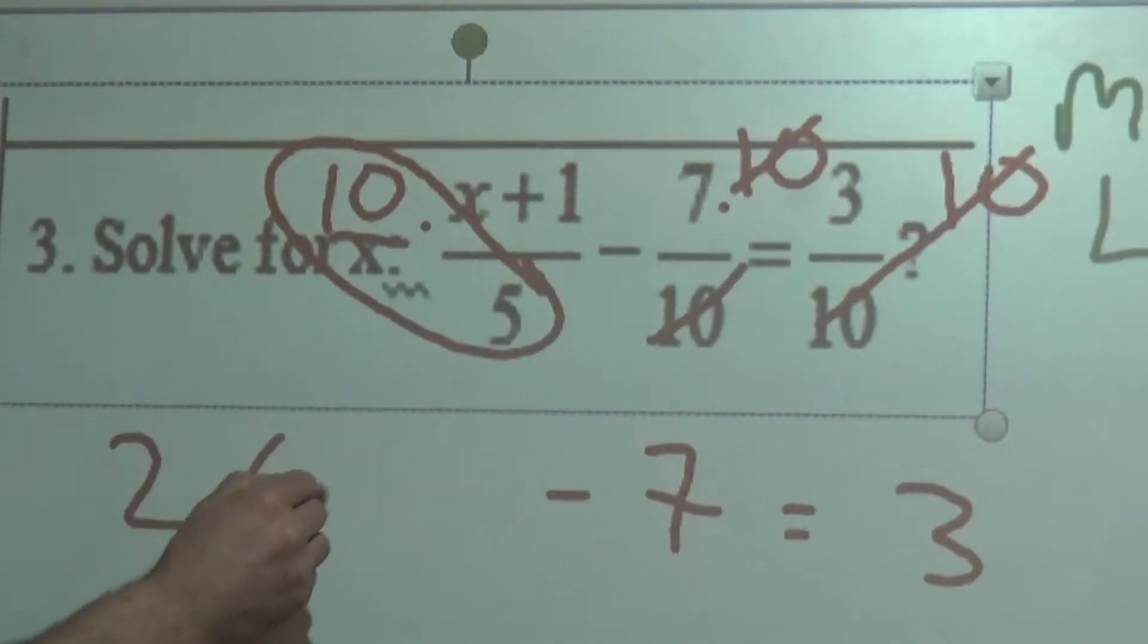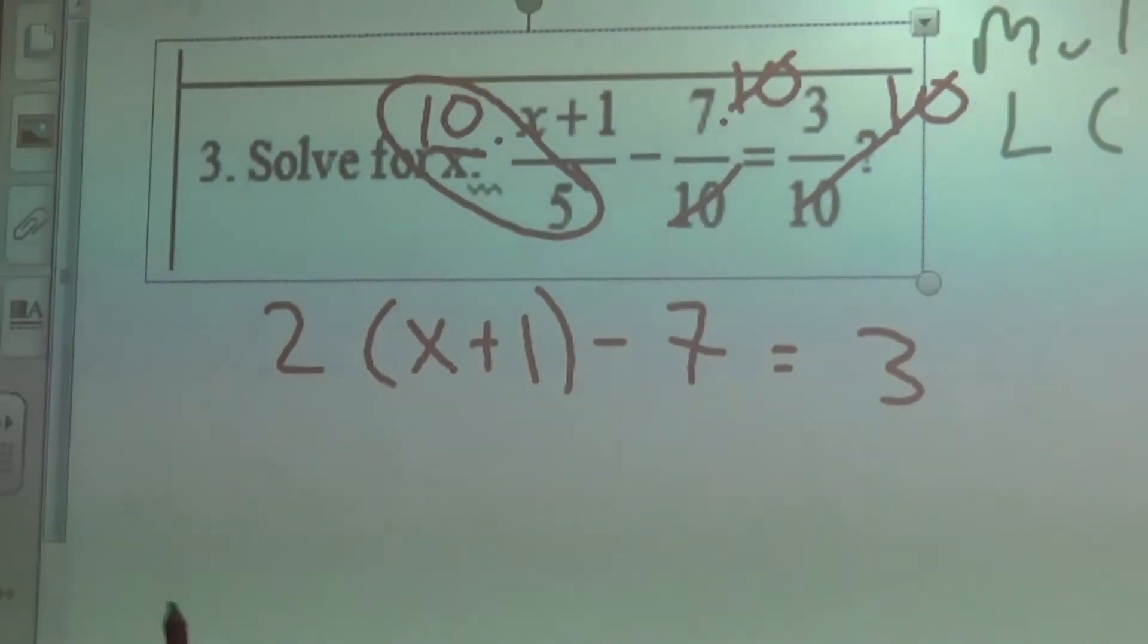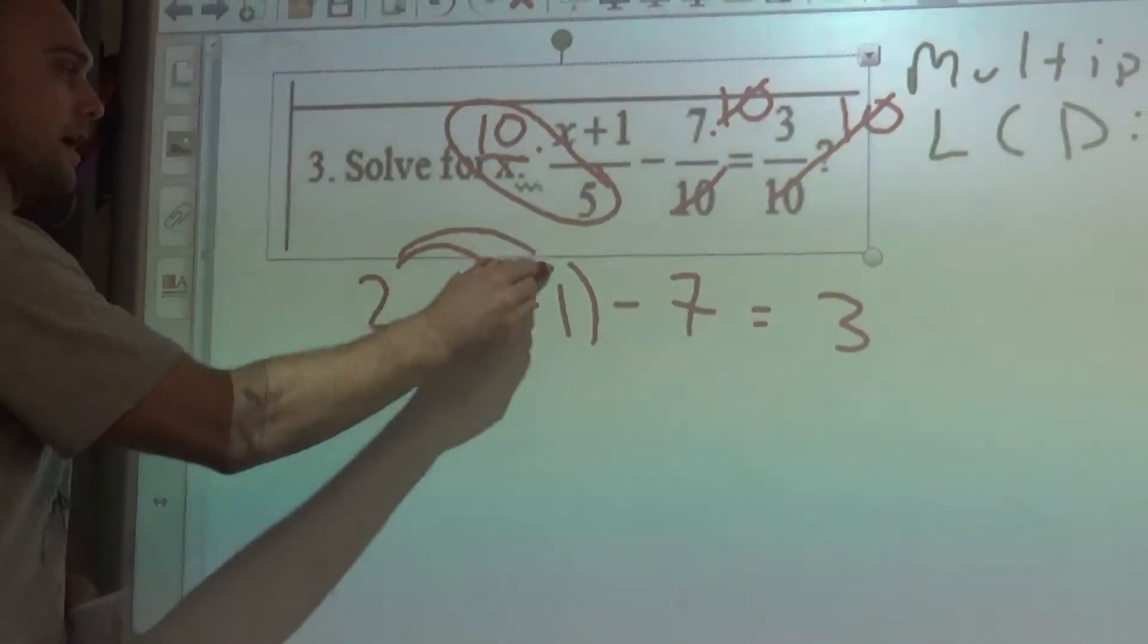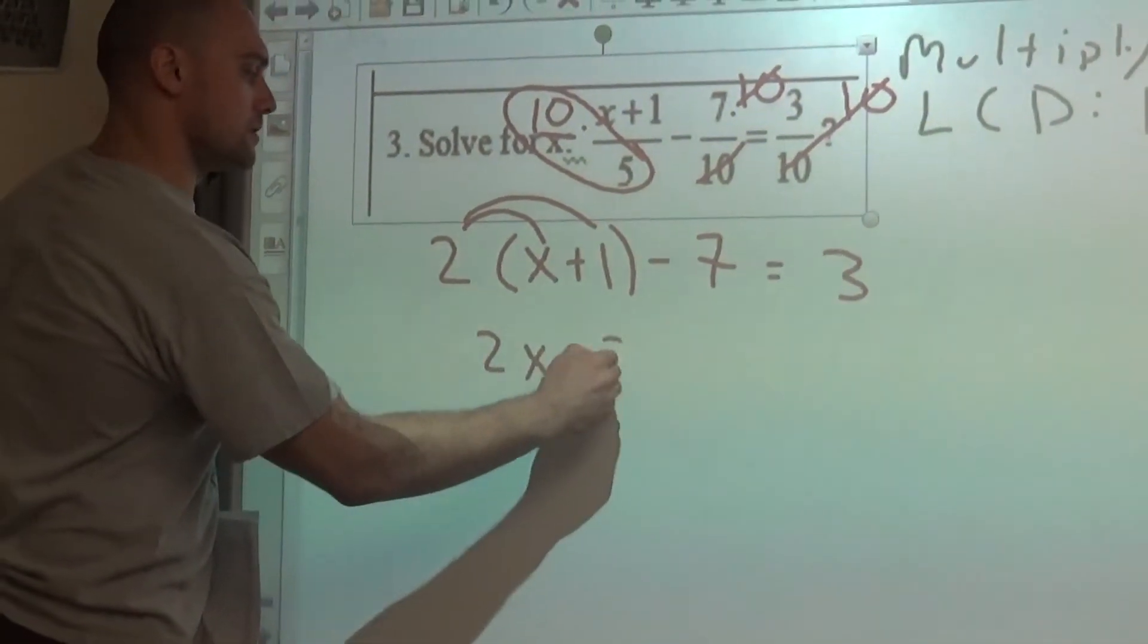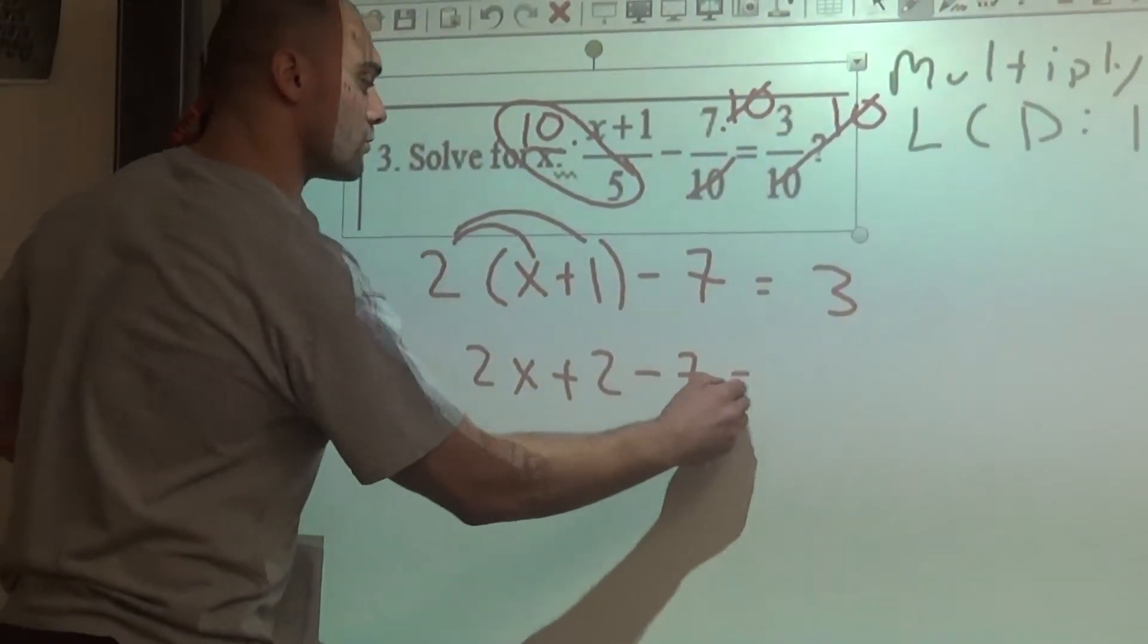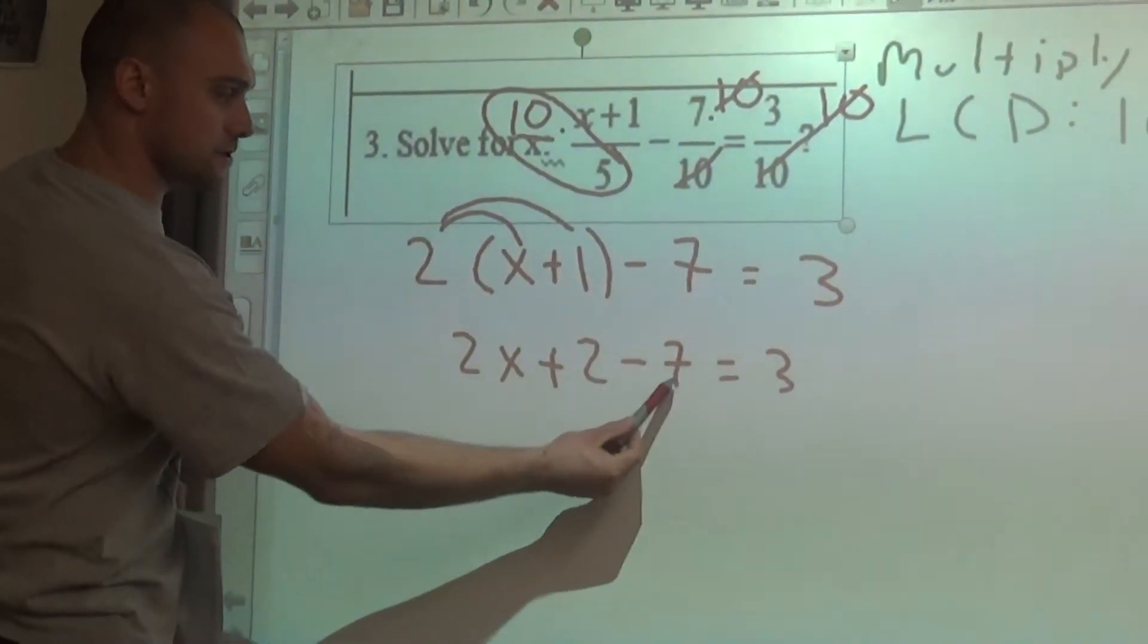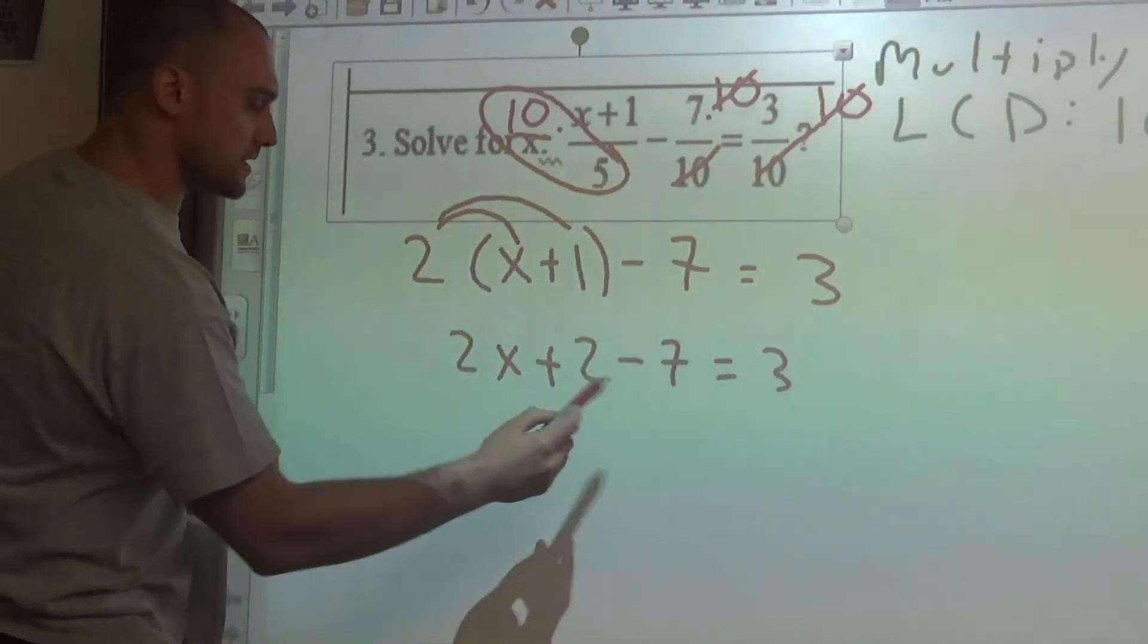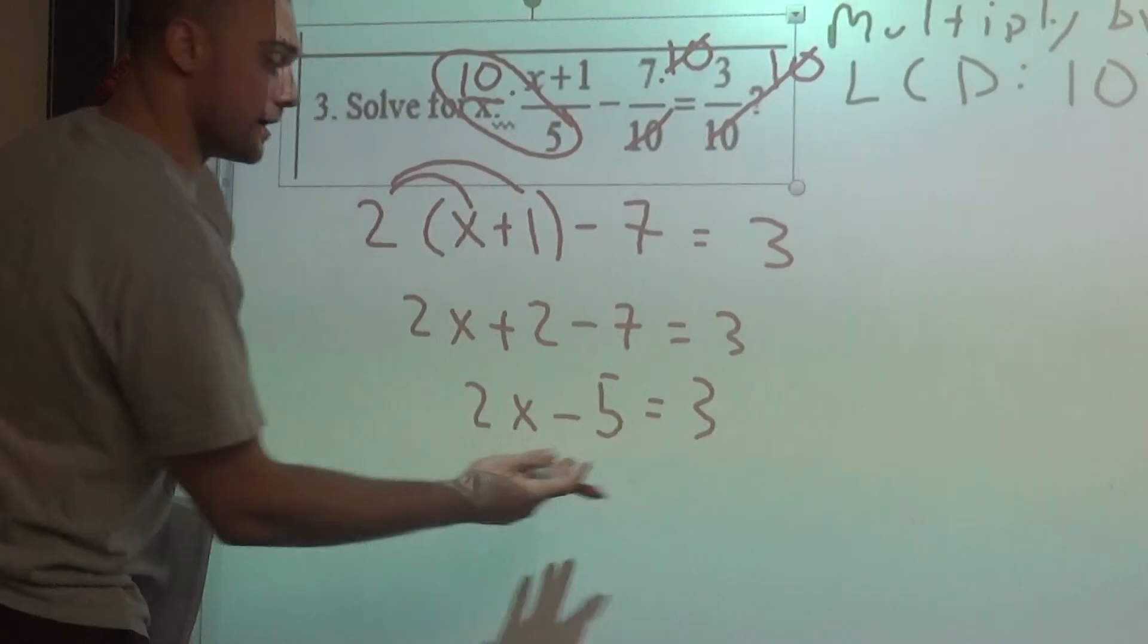Now from here, we can distribute: 2x plus 2 minus 7 equals 3. Here we can combine like terms. 2 minus 7 gives me minus 5. All right, now we're comfortable with this.